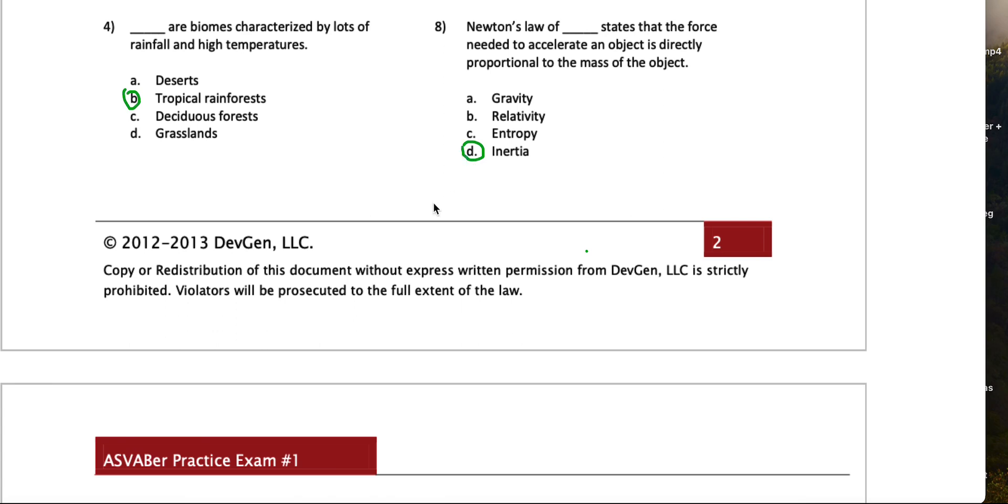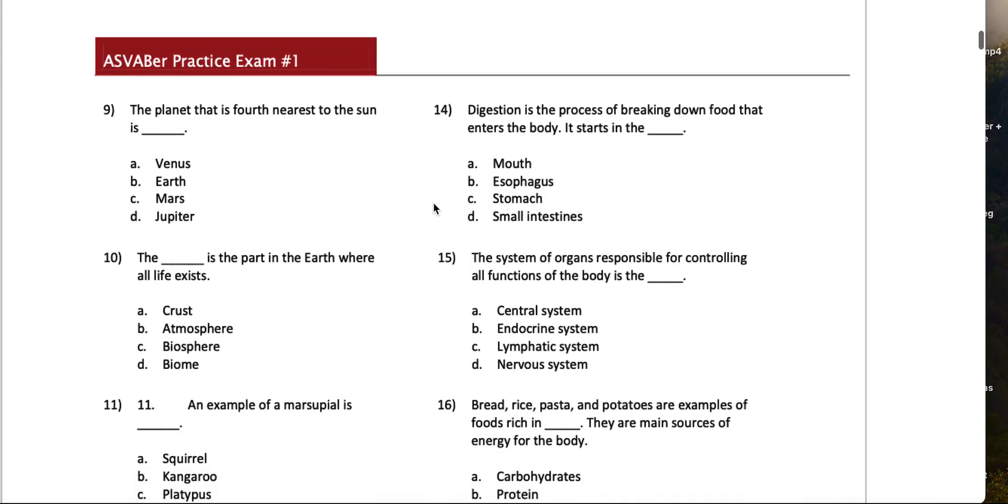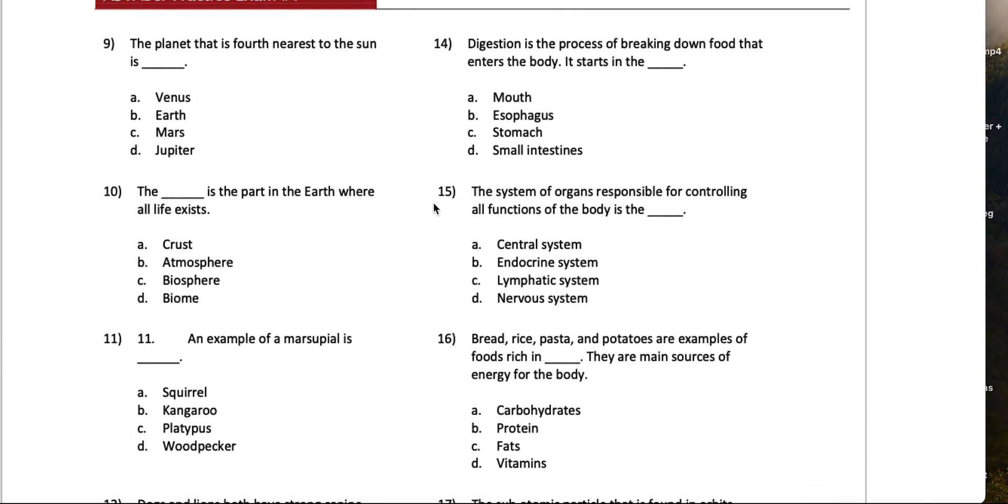I know Newton is probably most well known for gravity, but that one is inertia. Number nine, the planet that is fourth nearest to the sun is Venus, Earth, Mars, Jupiter. I'd say Mars for this one.